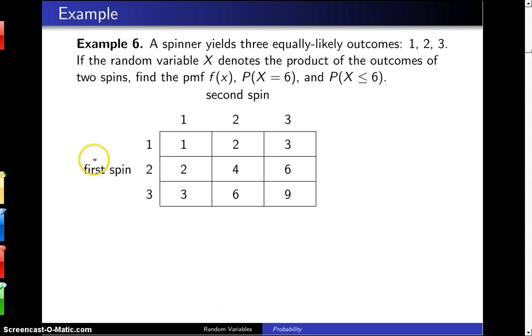The matrix given below has the results of the first spin denoted by the rows, and those outcomes are 1, 2, and 3, which are equally likely. And the results of the second spin denoted by the columns, again 1, 2, and 3. The entries in the matrix are the product of the outcomes of the two spins, and they range from 1 to 9.